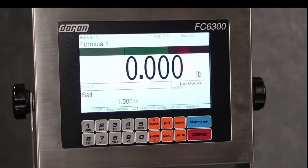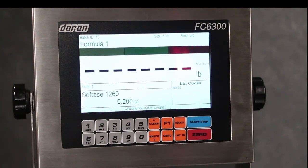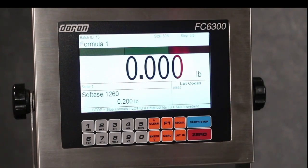As you see as I add weight to the scale, the AccuTrack bar is showing how close I am to reaching the target weight. As soon as I hit that target weight, the scale will let me know and move on to the next ingredient.